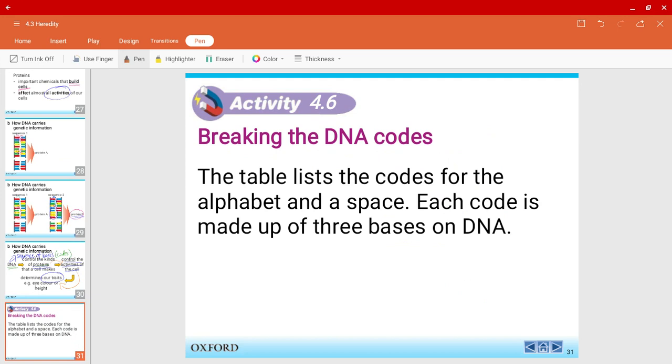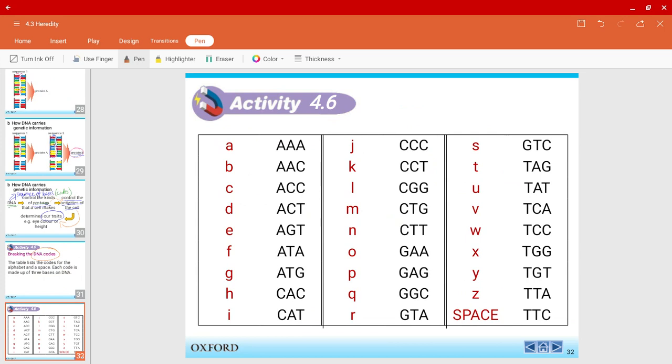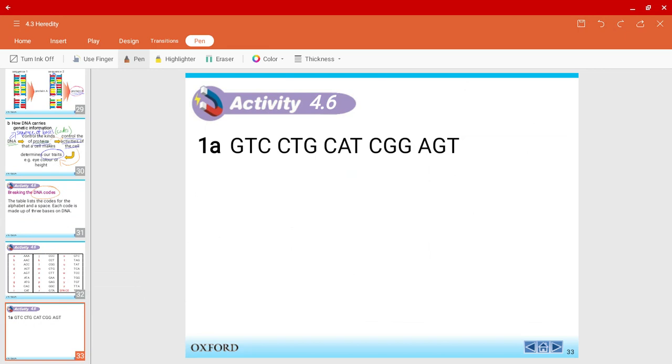So, now, let's try to decode some. Let's try to see how this actually works. Over here, you have a table. For example, look over here. We have AAA. So, AAA over here, those bases will mean a small letter A. If I look at over here, you have CCT, it will mean K. So, do you understand what is going on? Now, let's look at some questions. Question A, 1A. We have GTC, CTG, CAT, CGG, AGT. And you must be thinking, what on earth is this? Don't worry. We will do one by one. We will refer it back to the table and help us to solve it. This is activity 4.6.